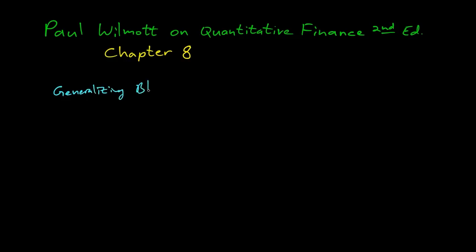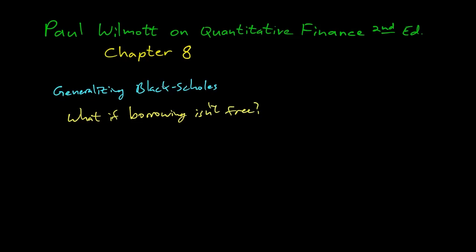Now let's see a generalization of Black-Scholes. One example is: what if borrowing stock isn't free? In the original Black-Scholes, we assumed you could short a stock with no cost — no interest rate to pay. But in the real world, if you borrow someone's stock, you have to pay for the privilege. Let's redo the derivation. We assume a log normal asset: dS equals mu S dt plus sigma S dX.